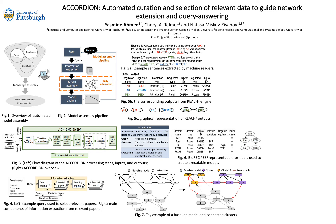Therefore, we use the whole graph and conduct clustering to extract groups of strongly connected elements that are connected to the baseline model, which represents the existing information. We used an unsupervised technique called the Markov Clustering Algorithm to cluster the network of interactions. We also merged clusters to create return paths between the model and the clusters, such as the one highlighted in red.